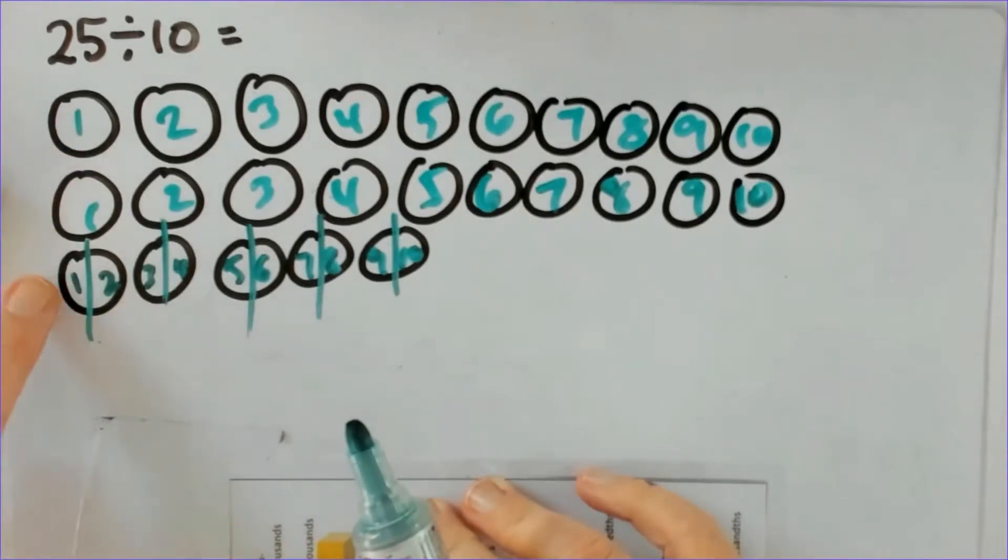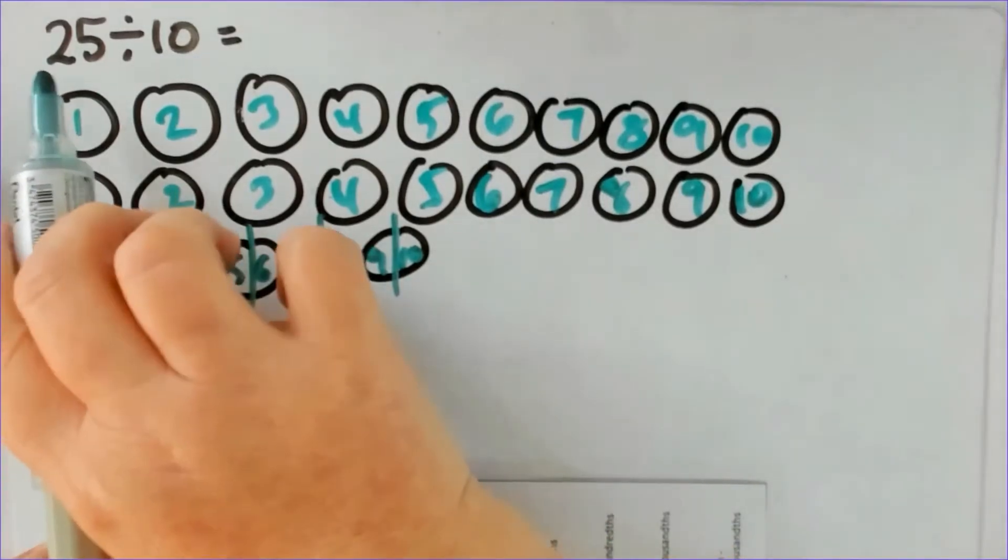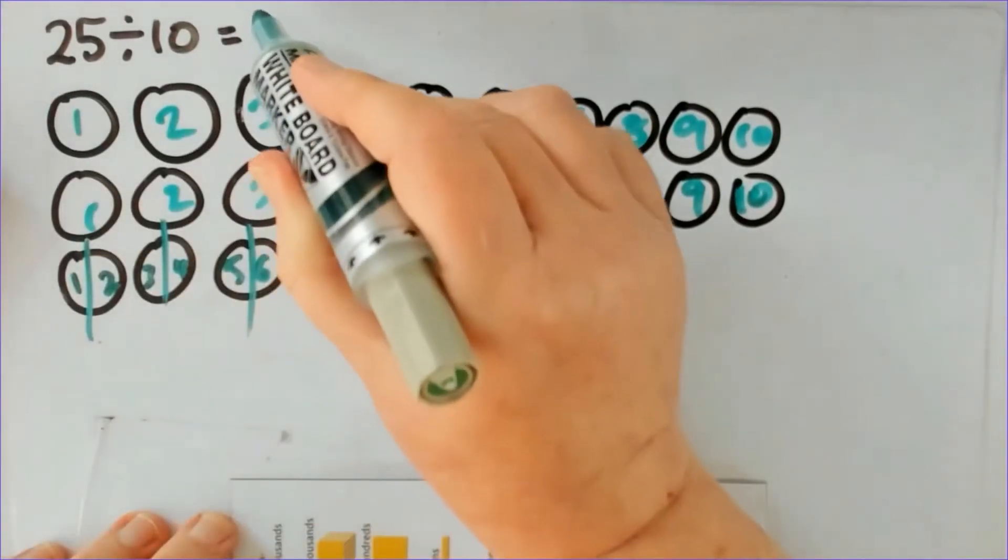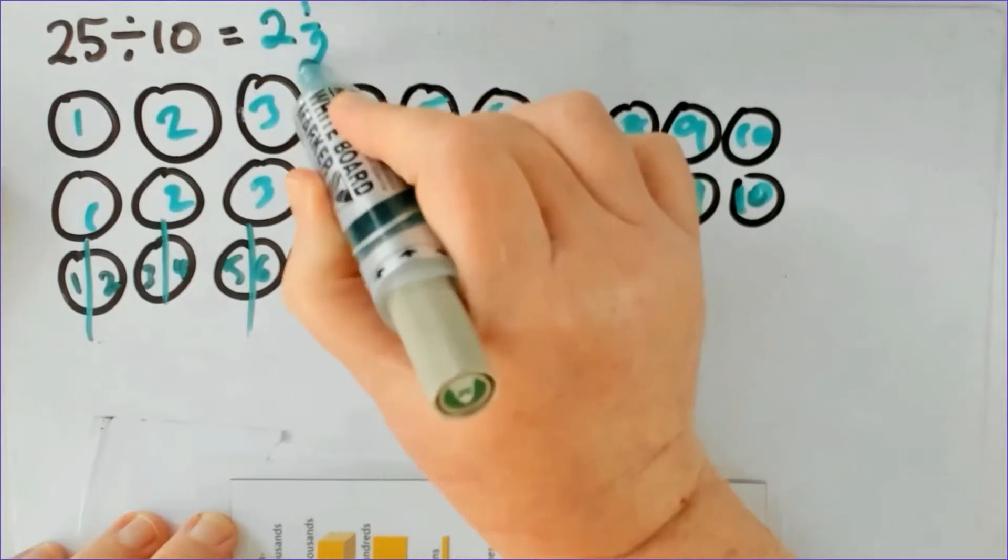And I'll say okay so how much pizza does each person get? So person one has one two and a half pizzas, person two has one two and a half pizzas, person three two and a half. So when I divide or share 25 pizzas between 10 people they each get two and a half pizzas.